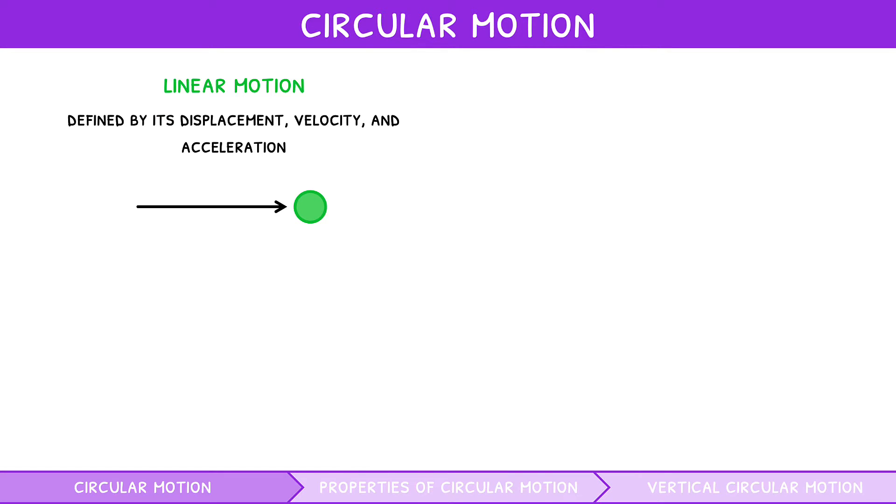To start, let's explore circular motion. As previously discussed, the linear motion of an object is defined by its displacement, velocity, and acceleration. Since an object in linear motion travels in one direction, it can have a constant velocity.